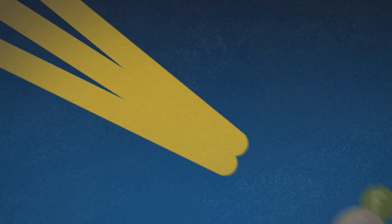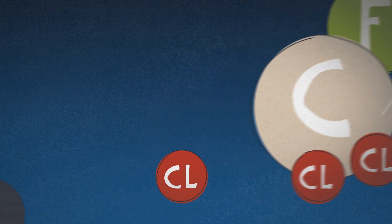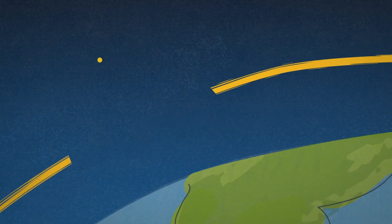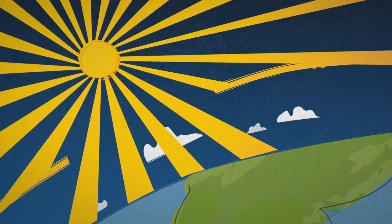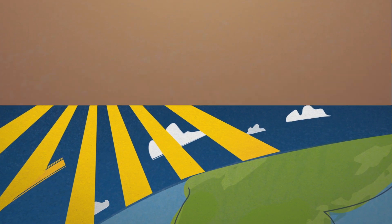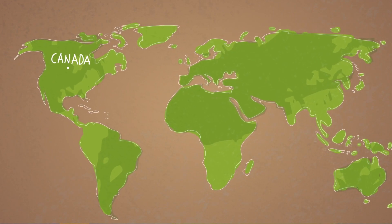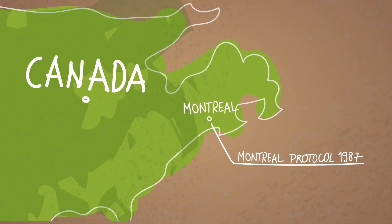Under ultraviolet radiation in the atmosphere, these substances break down and react with ozone, destroying the Earth's protective ozone layer. But to answer the original question, what happened to the ozone hole? The 1987 Montreal Protocol happened.